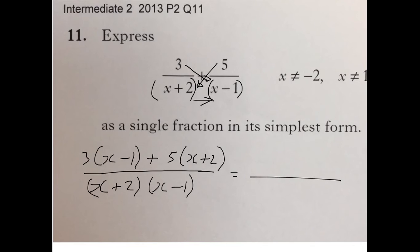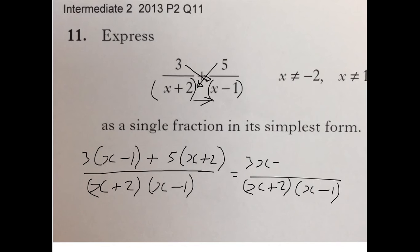So leave the denominator as it is, and just multiply it out. 3 times x gives you 3x, 3 times minus 1 gives you minus 3, plus 5 times x gives you 5x, and 5 times 2 gives you 10.